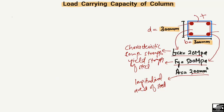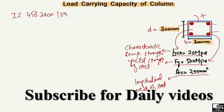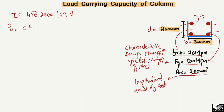We will use the equation from IS 456-2000, Clause 39.3. Using this equation, the load carrying capacity of the column Pu equals 0.4 × fck × Ac plus 0.67 × fy × As, where Ac is the area of concrete and As is the area of the steel bar.